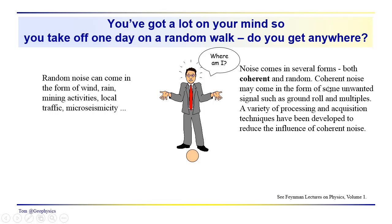We should note that noise is not always random. We do have coherent forms of noise - other types of signal that we aren't interested in that overprint the reflection events. Coherent noise could be ground roll, the direct arrival, multiples.